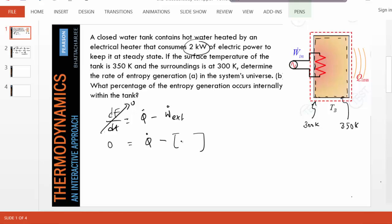Using the in-hip convention, work in is negative, so the external work sign should be negative 2 kilowatts. This gives us Q̇ to be, as you manipulate this equation, minus 2 kilowatts.